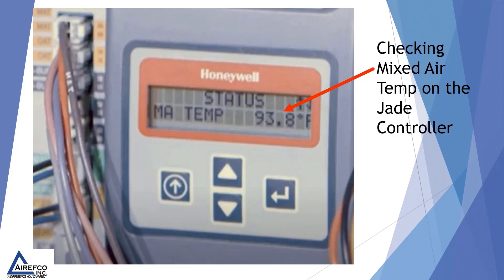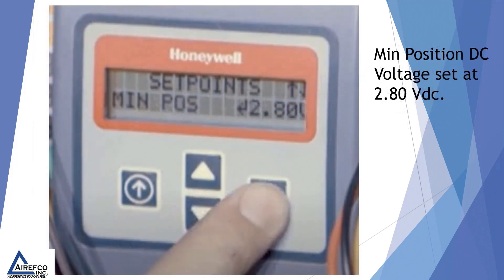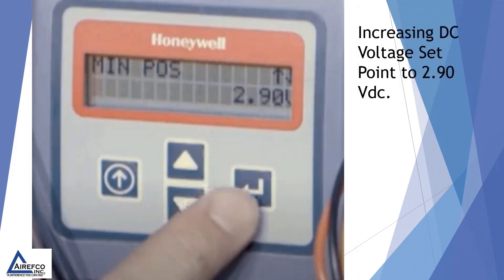We then go into our status on our Honeywell Jade Controller and scroll down to find our mixed air temperature, which is 93.8 on this particular example. This is too high and we need to adjust our voltage to return this mixed air temperature closer to what we require. So we go into our set points and find our minimum position, which is read out in voltage — we find that we are at 2.80 volts DC. We are going to adjust our voltage up to 2.90 volts DC to increase our outside air and adjust our mixed air temperature.